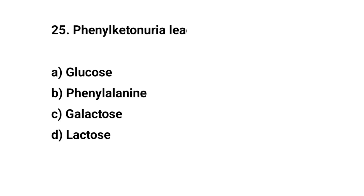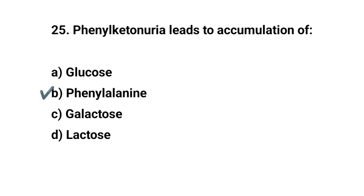Question number 25. Phenylketonuria leads to accumulation of? The right answer is B: Phenylalanine.